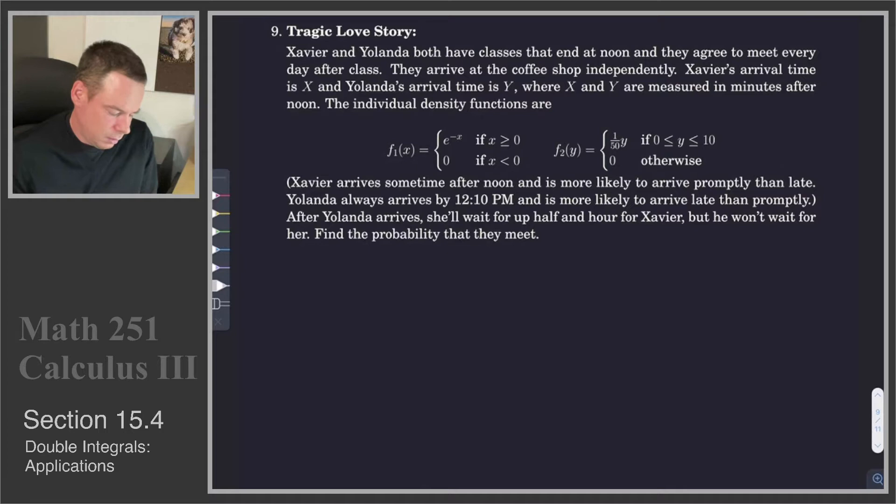Yolanda's is given by 0 again if Y is less than 0. But for Y between 0 and 10, it's given by 1 over 50 times Y. So Yolanda will only arrive within the first 10 minutes, never after that. Xavier arrives sometimes afternoon, more likely to arrive promptly than late. Yolanda always arrives by 12:10 and is more likely to arrive later than promptly.